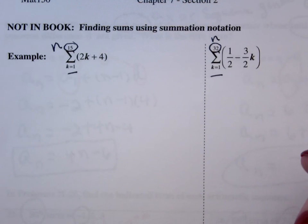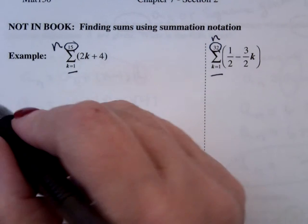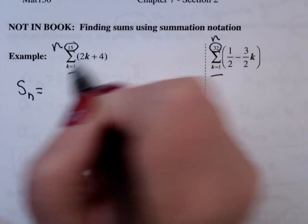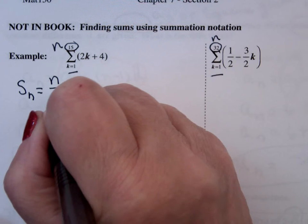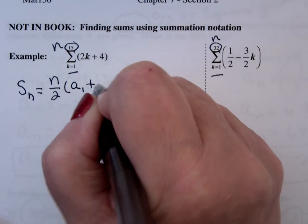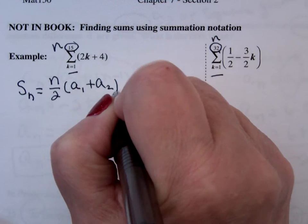So the biggest problem I have is what I'm going to do in terms of calculation. Well, I know the formula says that s sub n equals the number of terms divided by 2 times the first term plus the last term. I kind of find that easier to work with.